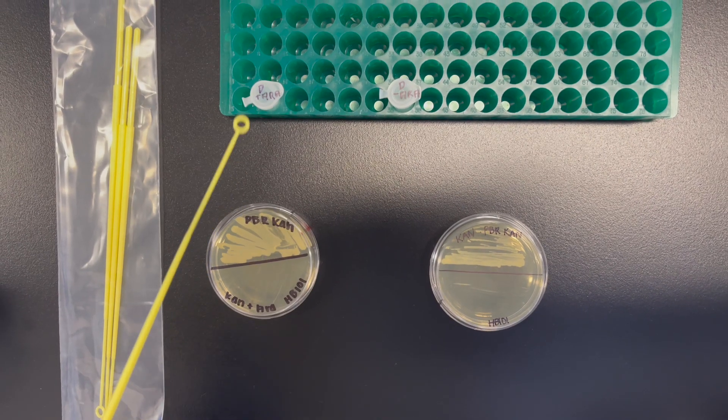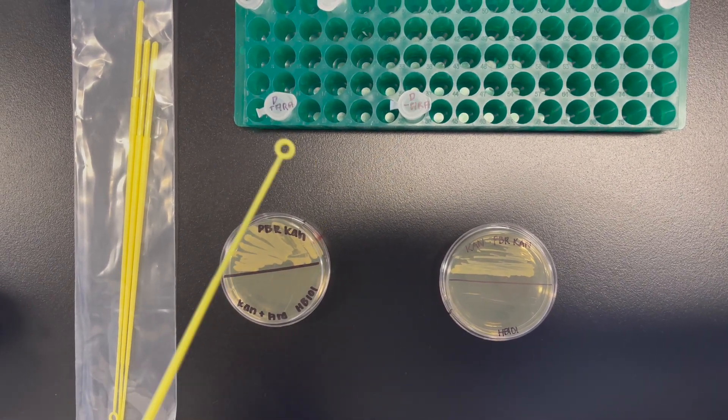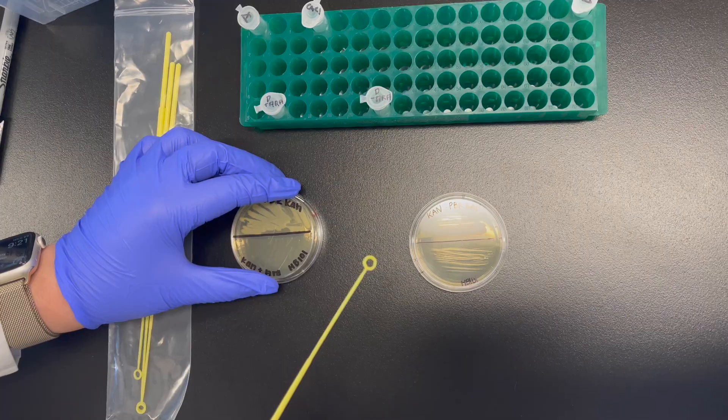Using an inoculating tube, take five colonies from the arabinose plus plate and add it into the plus arabinose tube and do the same for a minus arabinose.